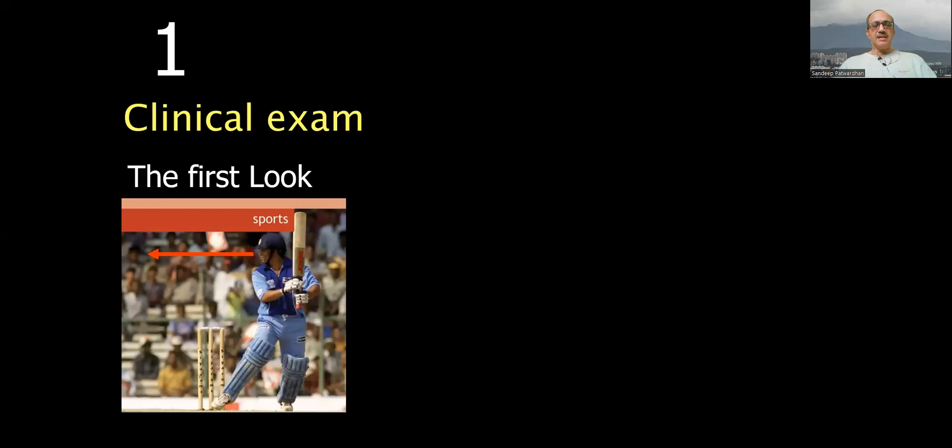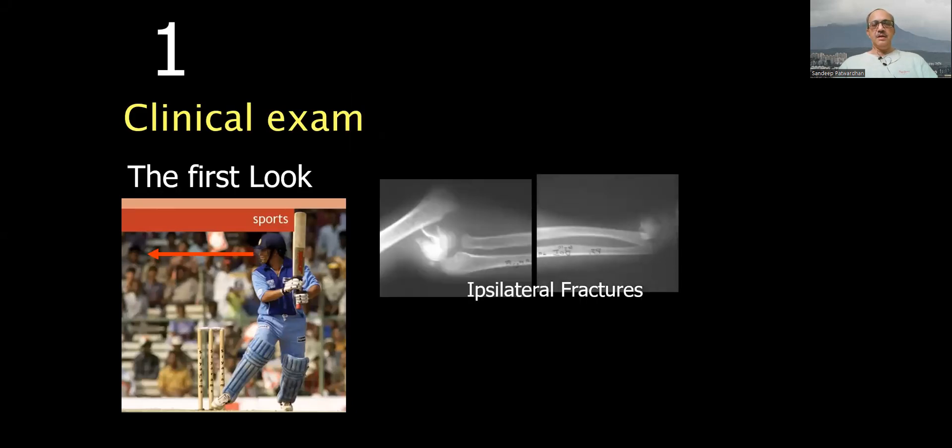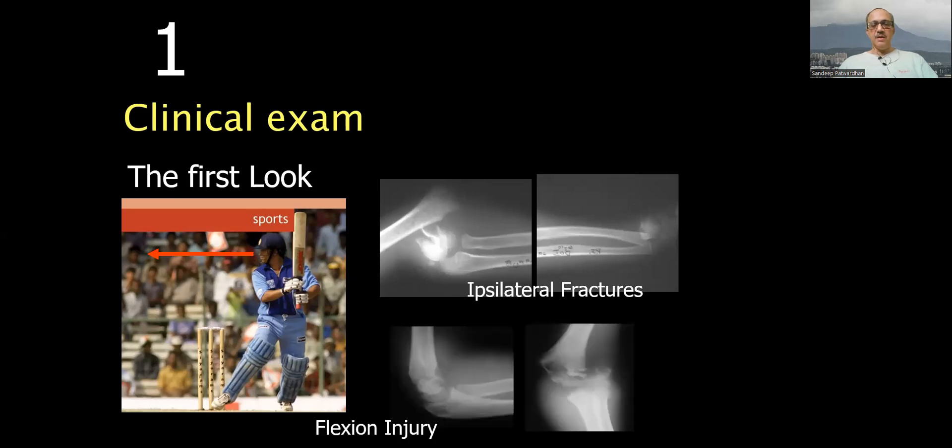It's important that we examine the child at presentation. The first look is very important. Make sure that with the elbow you don't miss a lower radius fracture which is common. Make sure that you don't miss a flexion injury which is a different type of fracture which you need to address.